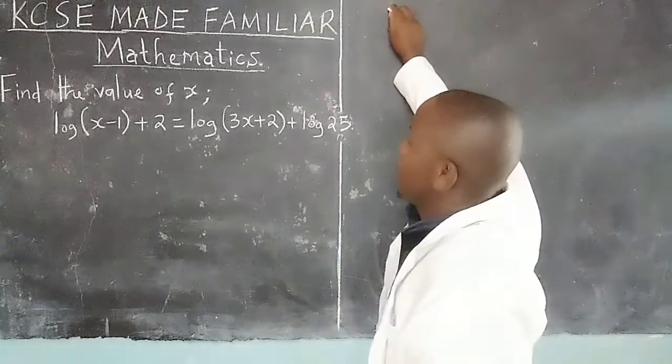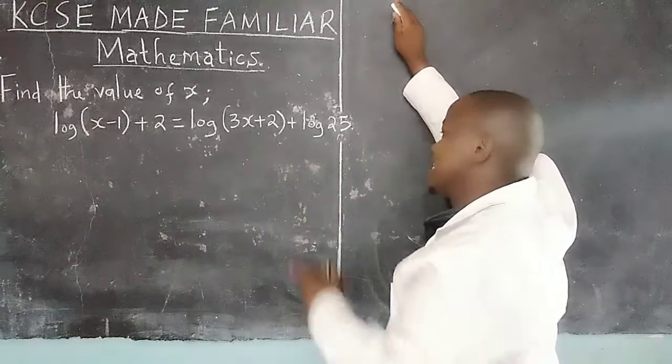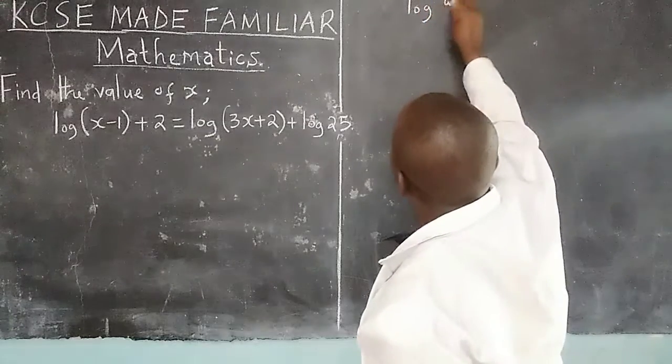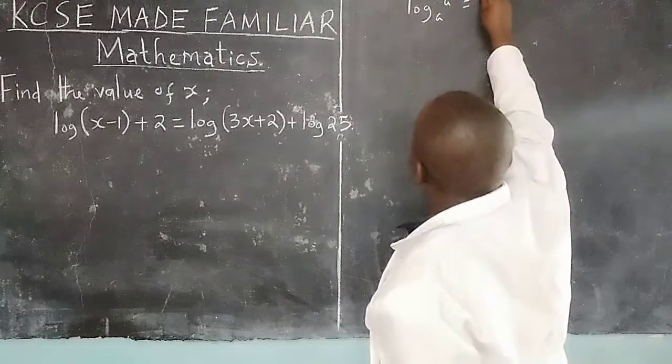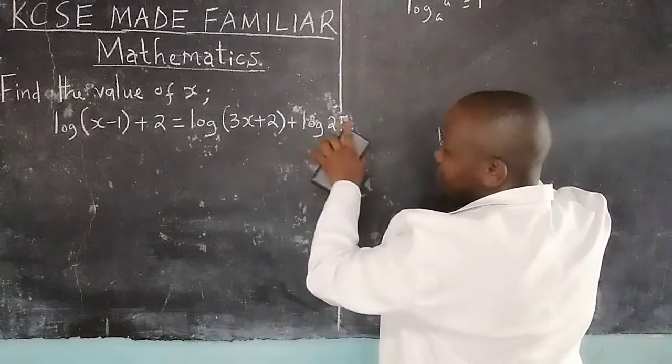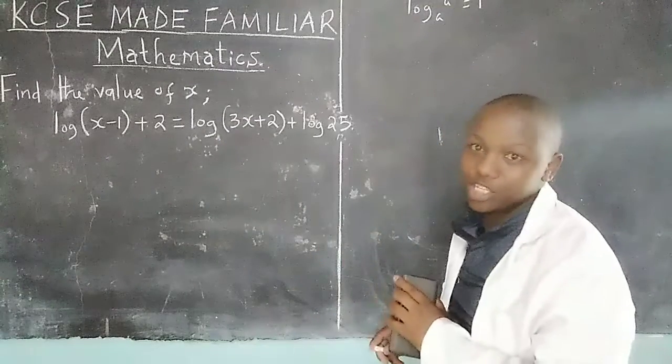For example, here we can introduce base 10 in all the terms such that because of the law which says that the logarithm of a number to the same base is equal to 1, then instead of 2, we use log₁₀(10) times 2, whose value doesn't change 2.